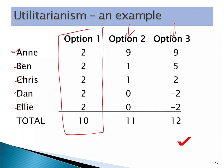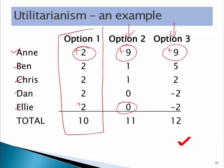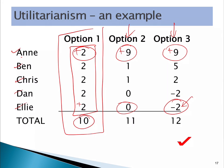For Anne, option one gives her plus two happiness, option two gives her plus nine, and option three gives her plus nine. Contrast Ellie: under option one she is plus two, she is zero or unchanged under option two, and under option three she is actually minus two — she's unhappy. The hedonistic calculus for utilitarianism adds up all the happiness under each option. Option one has total happiness of 10, option two has 11, and option three has 12.